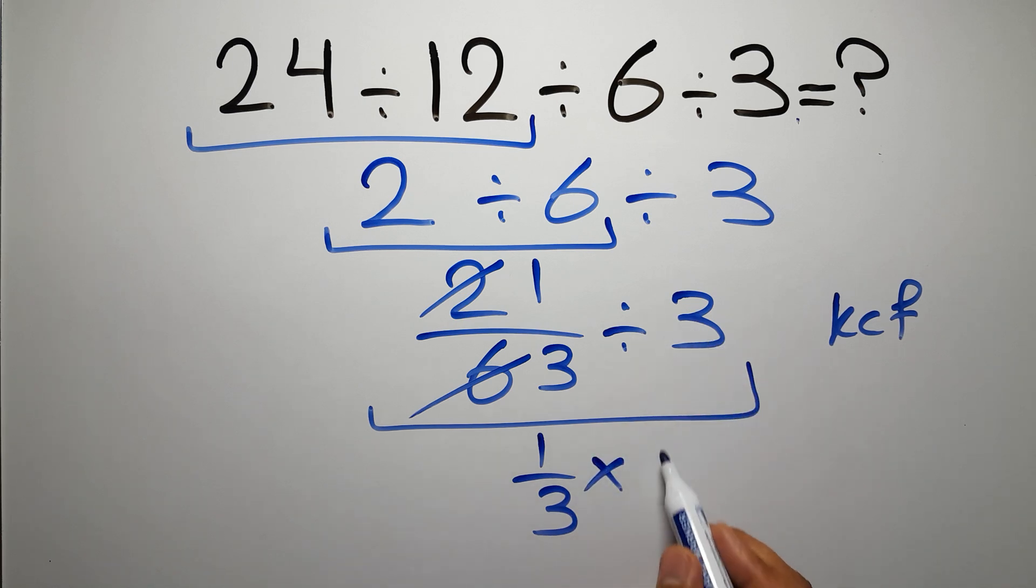We have 1 over 3 times 1 over 3, which equals 1 over 3 times 3, which equals 9.